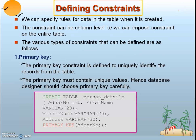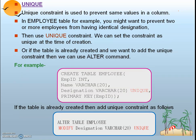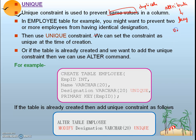Moving on to the unique constraint: the unique constraint is used to prevent duplicate values in a column. Any key attribute of a table should carry only unique values. For example, in an employee table, the designation attribute may require unique values.